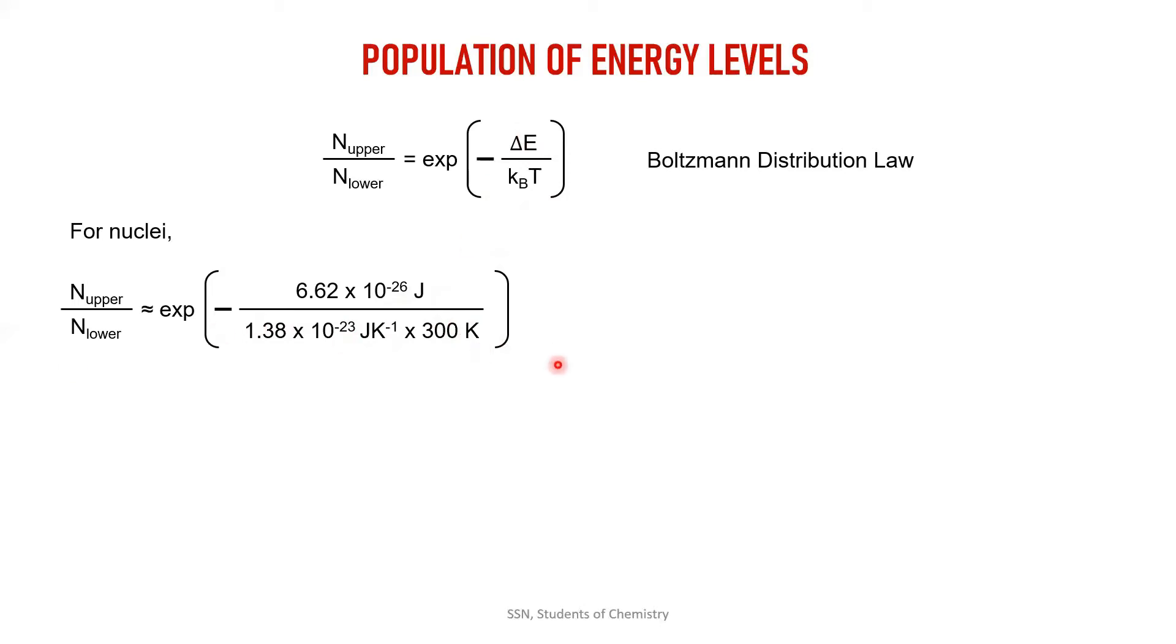Del E we have calculated in the last slide. If I simplify this, I will get exponential of minus 1 into 10 power minus 5, which I can also write as 1 minus 10 power minus 5. For electrons, if I simplify, I will get 1 minus 10 power minus 3. Look closely.